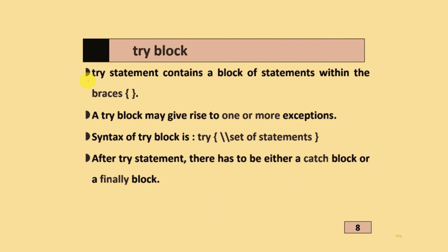The try block contains a block of statements within curly brackets. A try block may give rise to one or more exceptions. The syntax of the try block is: write try followed by curly brackets containing the set of statements. After a try statement, there has to be either a catch block or a finally block.